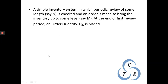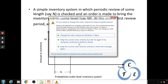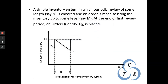Let us start with a simple inventory system example. Suppose we have to keep some inventory in our house or shop up to a level M. After some period N, we check how much inventory is left. According to the consumption during that period, we order the same inventory at the end of period N to bring the inventory back up to level M.